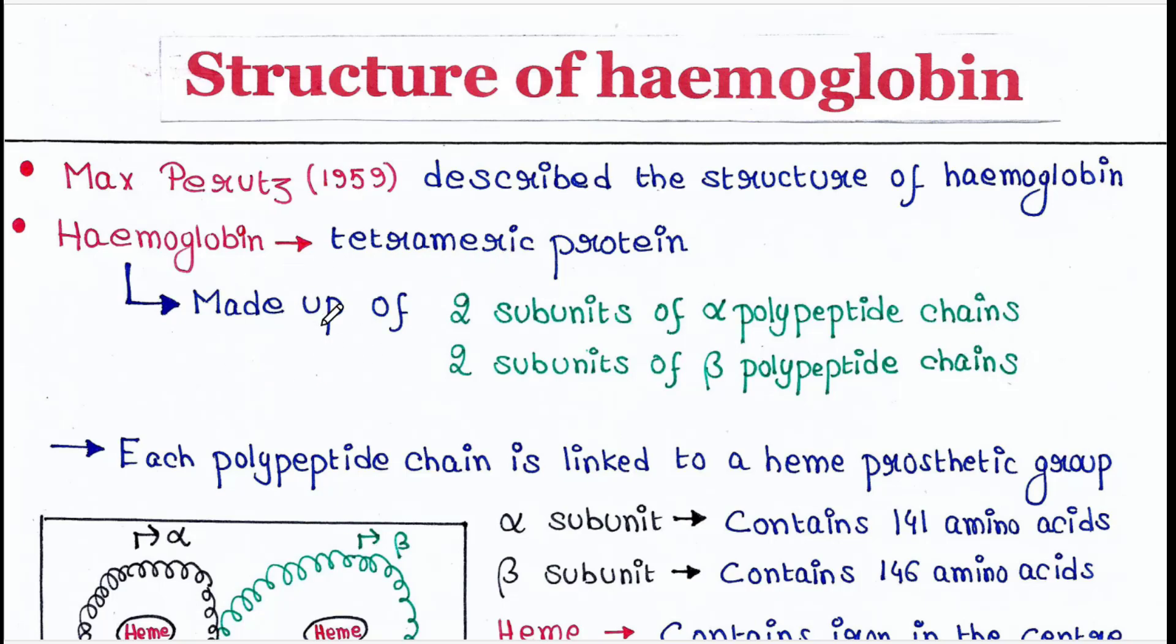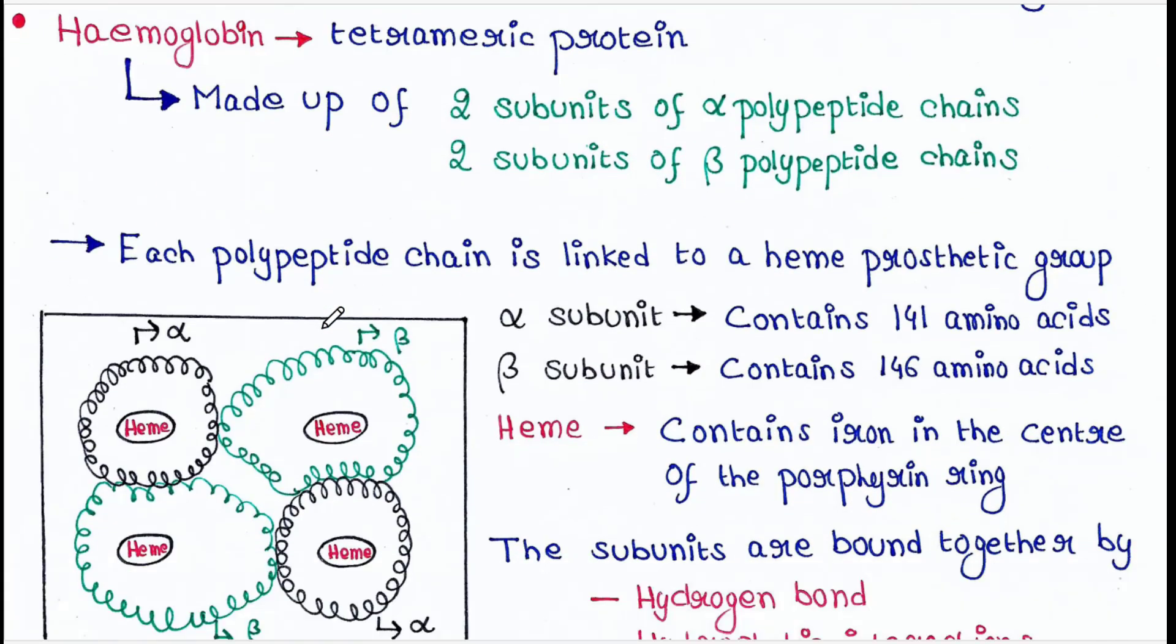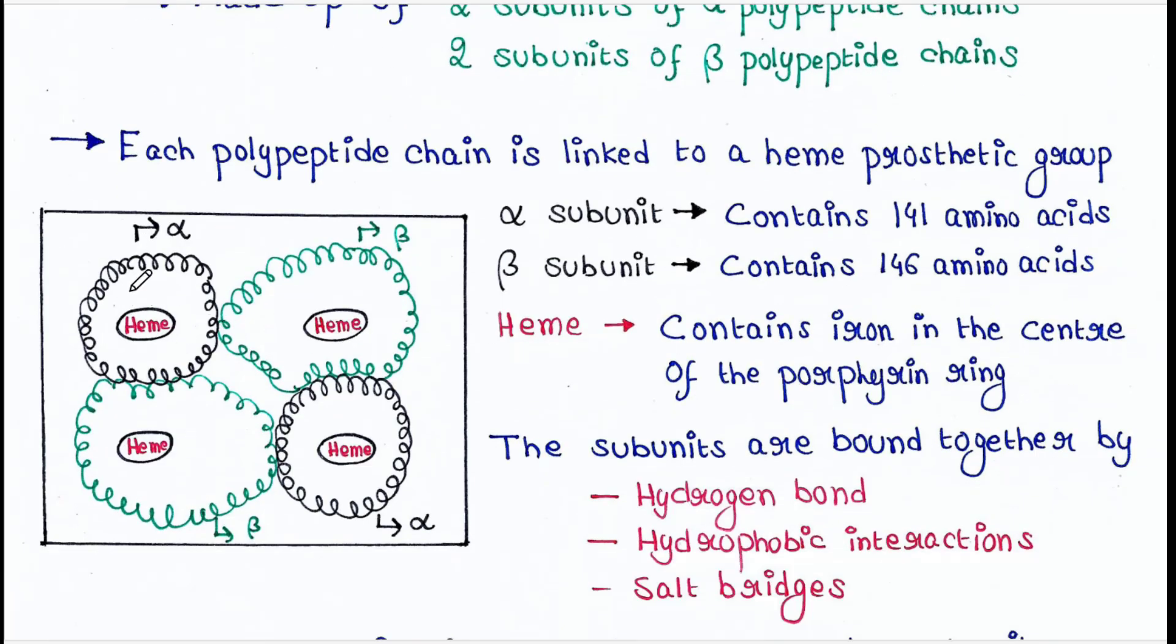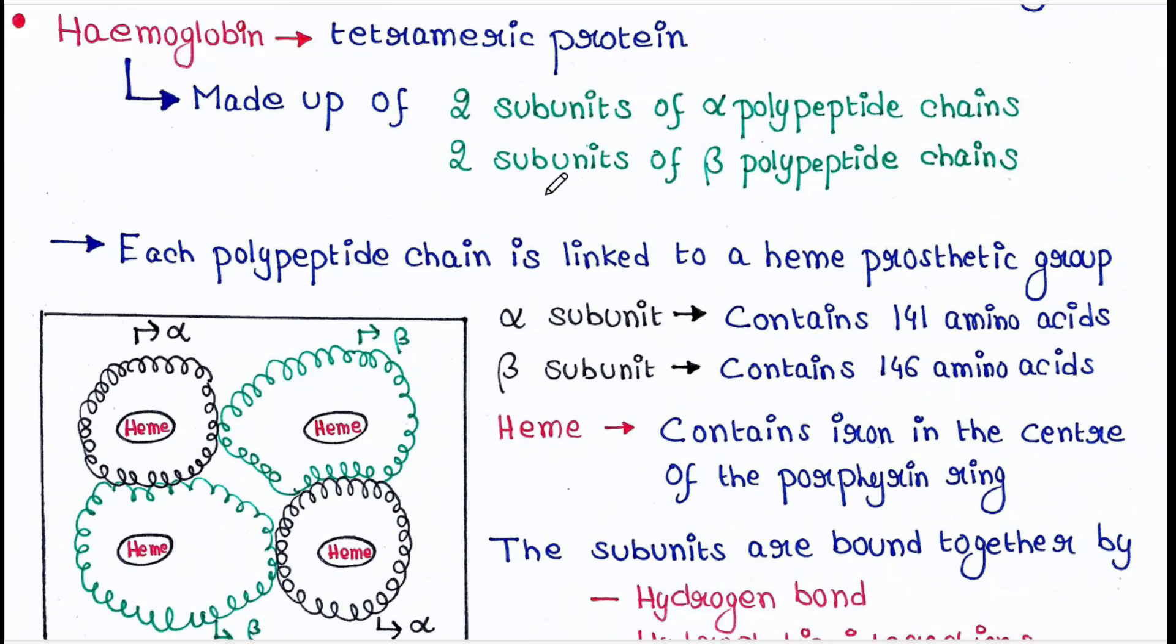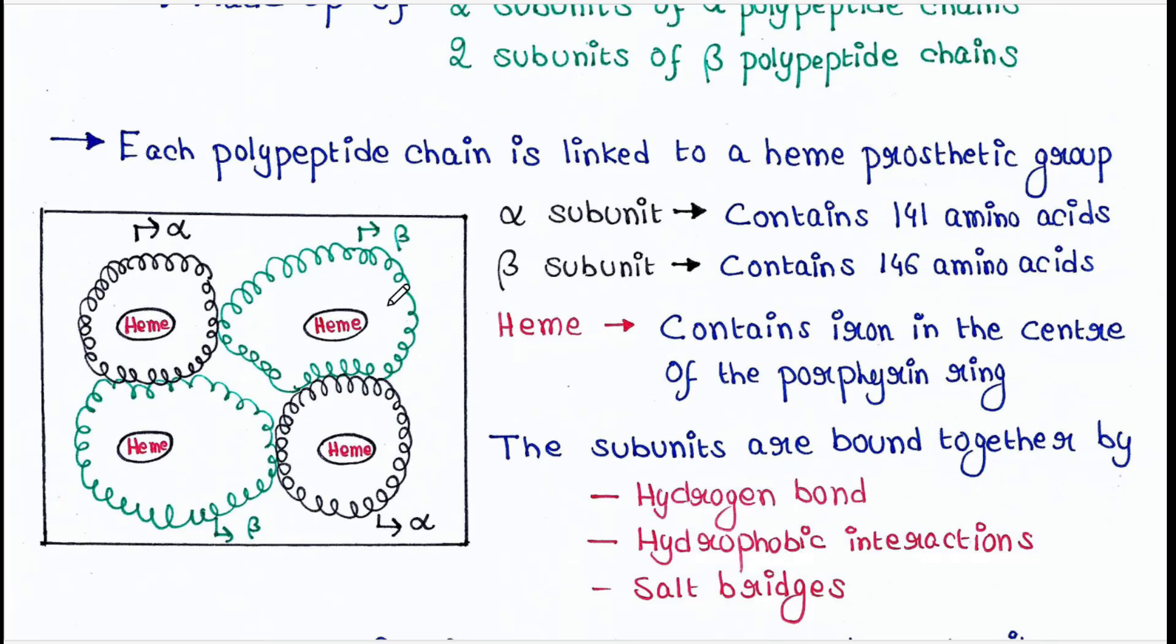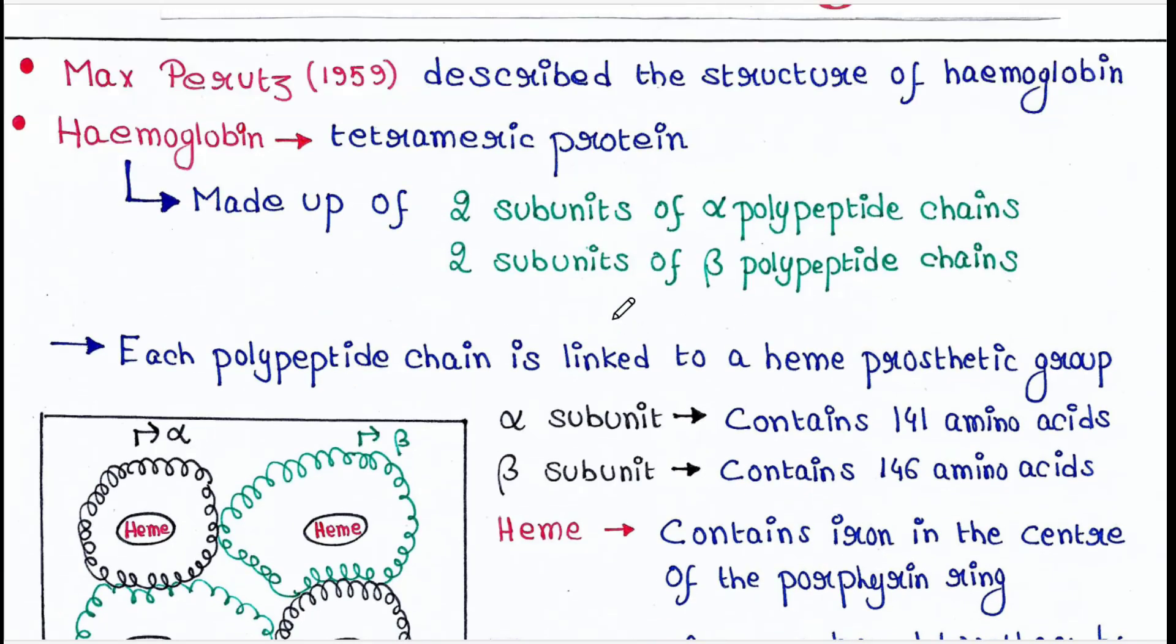So basically it is made up of two subunits of alpha polypeptide chains. This is one alpha polypeptide chain, this is another alpha polypeptide chain, and it has two subunits of beta polypeptide chains. So this is one beta polypeptide chain, this is another beta polypeptide chain. So in total it has four subunits, hence it is called tetrameric protein.